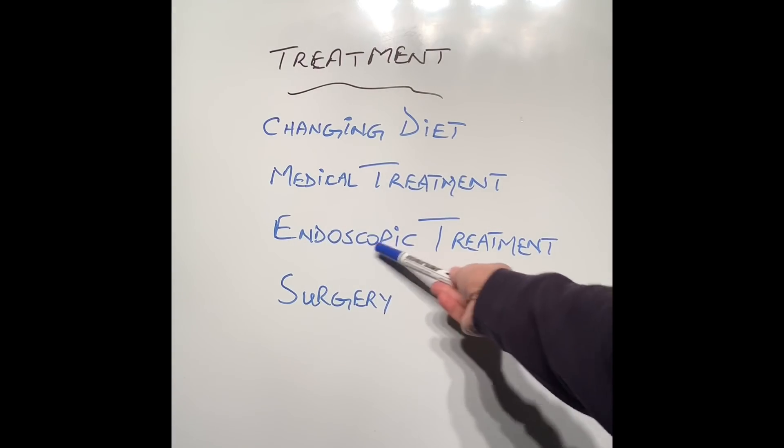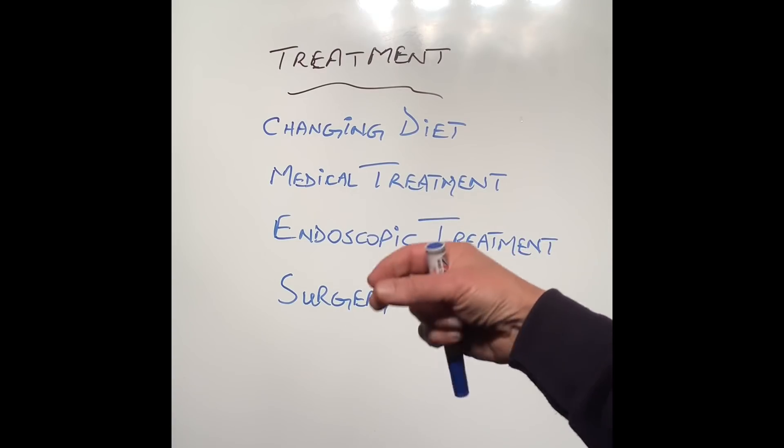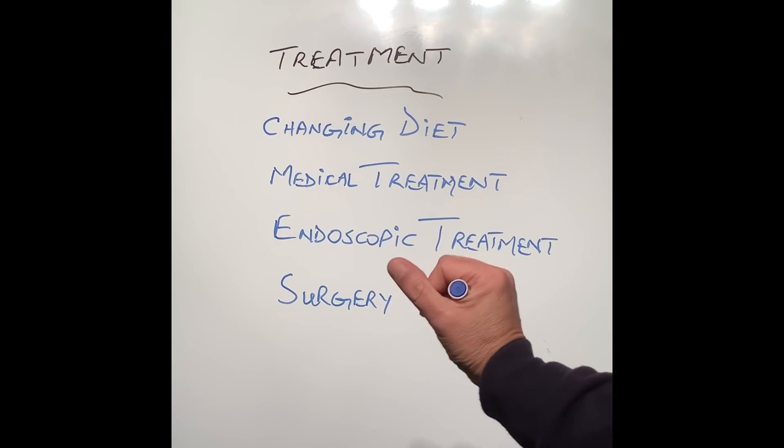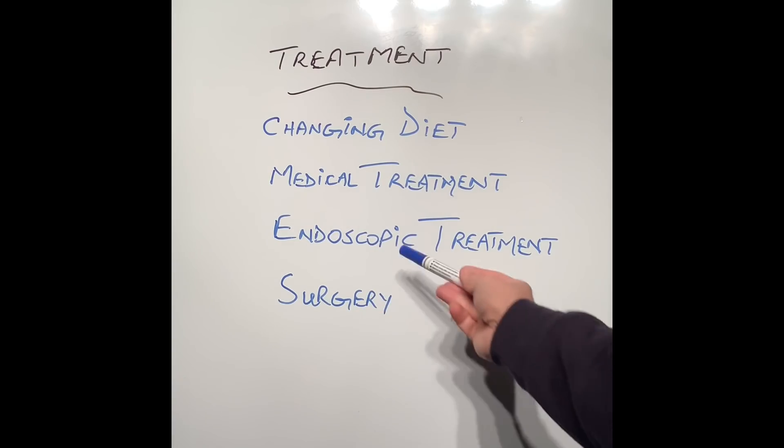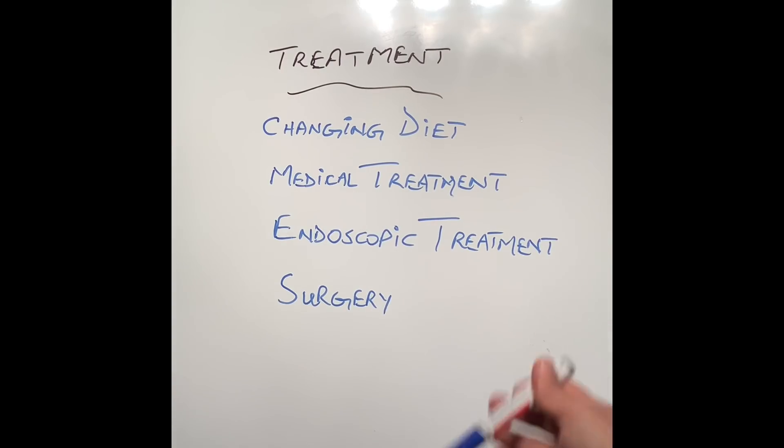Endoscopic treatment, which means treatment given through the camera test, like injection of botox and also cutting the muscle inside or stretching it with a balloon, are mostly done for achalasia patients, the last condition I spoke about.